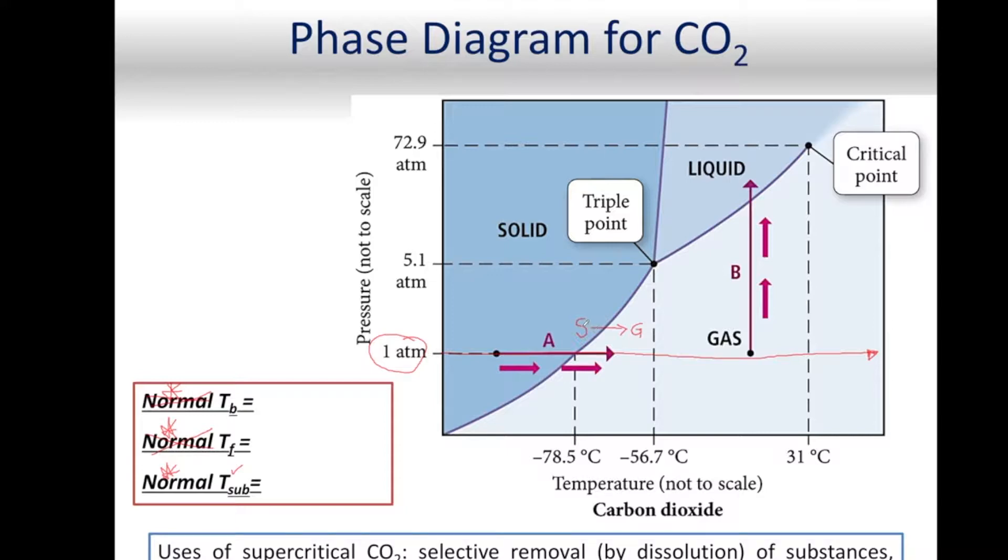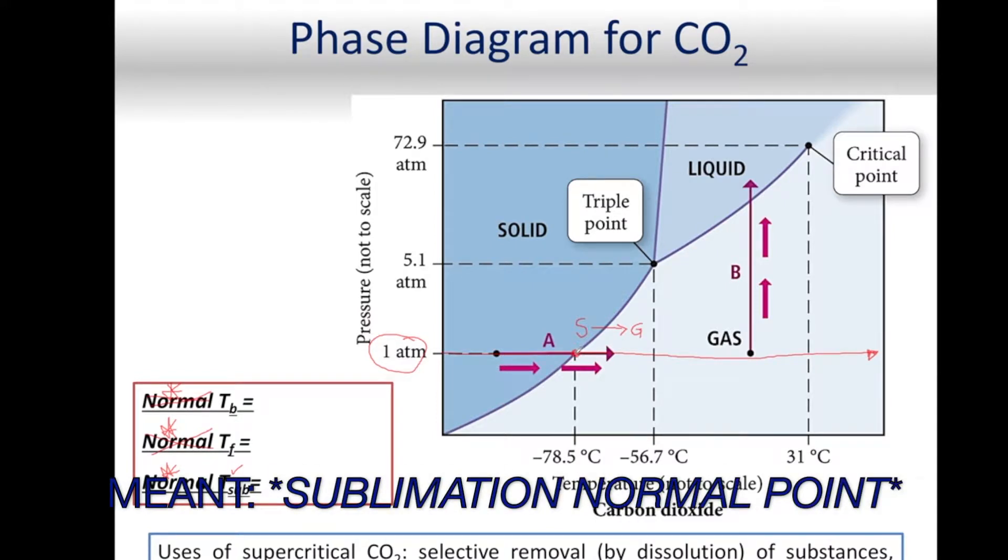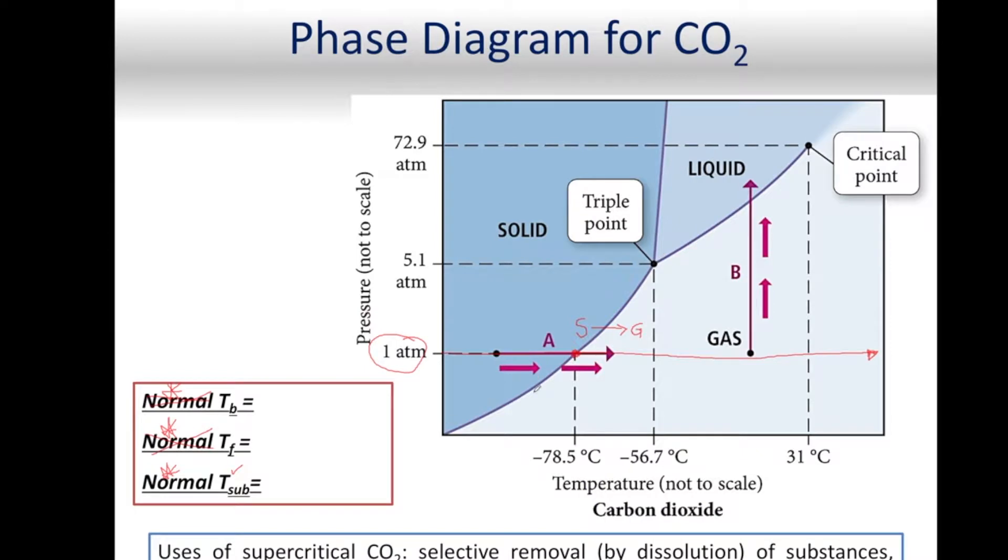So for this transformation, solid to gas, the sublimation normal boiling point is going to be at the intersection of this one atmosphere of pressure line with the equilibrium line of the solid gas transformation. So we read this temperature here, and that's going to be approximately minus 79 Celsius.